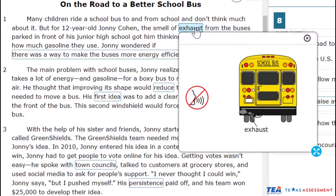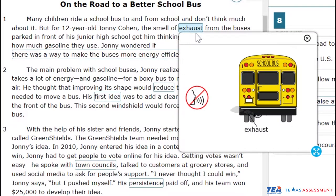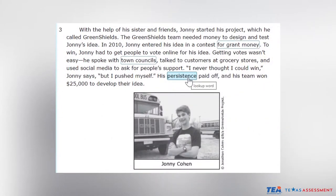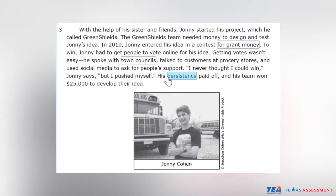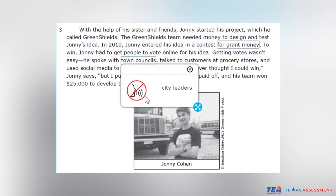Content and language supports help students navigate complex words or phrases through clickable animations that can help students identify what certain words or phrases mean. C&L supports can also define or clarify certain words, phrases, and sentences using simplified language, synonyms, definitions, and examples.